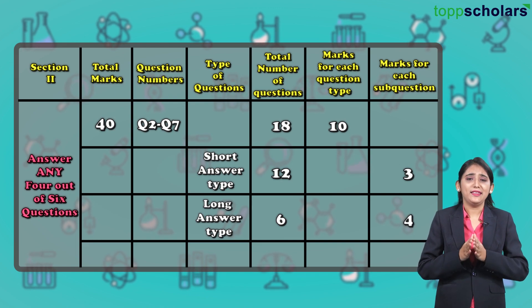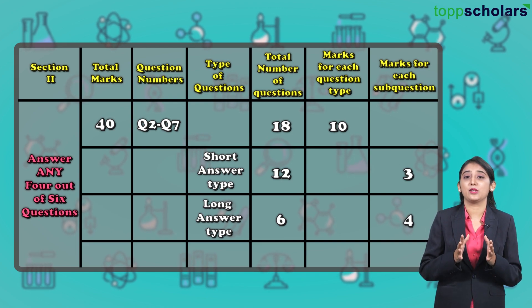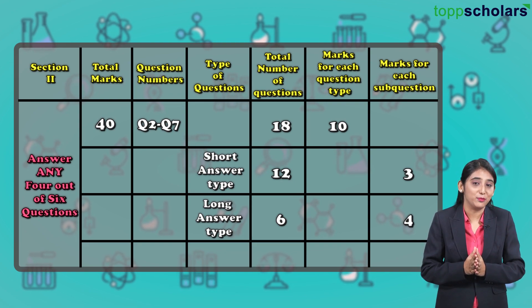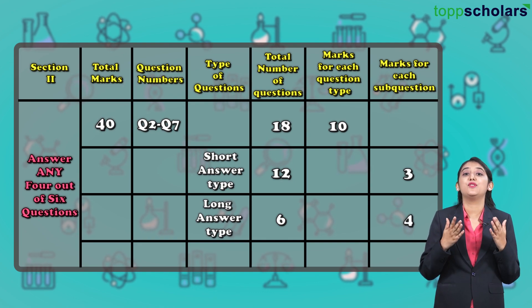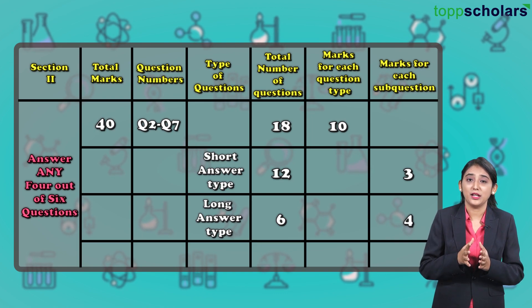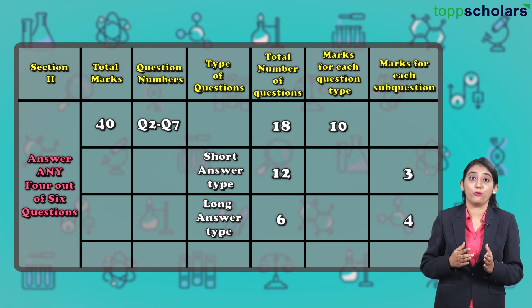In this section, the marks allotted for each question is 10 marks, and you need to attempt 4 questions. That means 4 into 10, which gives you a total of 40 marks. This 10 marks is divided into 3, 3, 4.